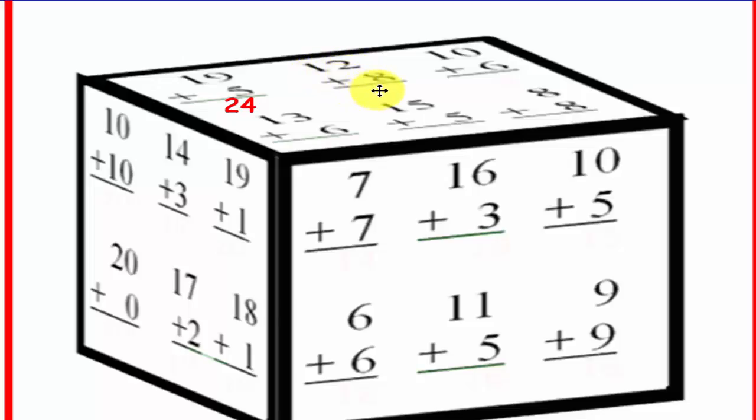Here we have 12 plus 8, 12 plus 8 is equal to 20. 10 plus 6, 10 plus 6 is equal to 16. 13 plus 6 is equal to 19. 15 plus 5 is equal to 20, and we have 8 plus 8 is equal to 16.